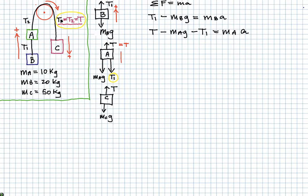I guess I need to emphasize here the directions. Like that. Okay, good. So we have the directions noted. So for C, we have MCG minus T is equal to MCA.